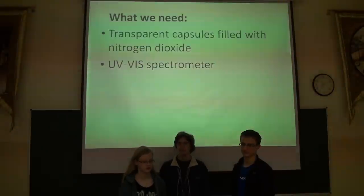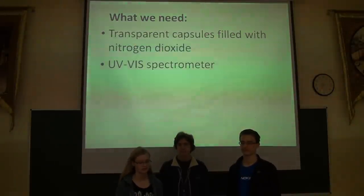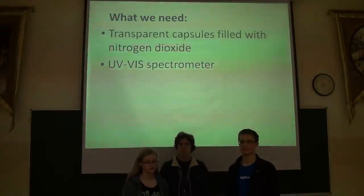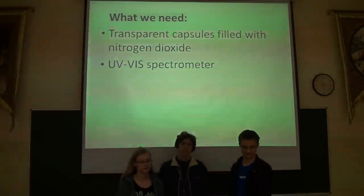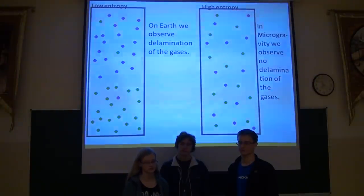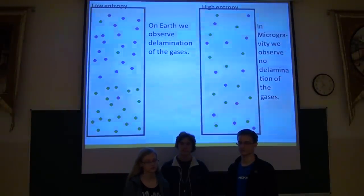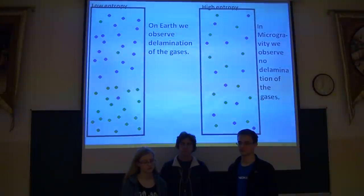Method. What do we need? Transparent capsules filled with nitrogen dioxide and a UV-Vis spectrometer. We take a few centimeter-long capsules filled with nitrogen dioxide, which is partially transformed into dinitrogen tetroxide. We place it vertically in the spectrometer.